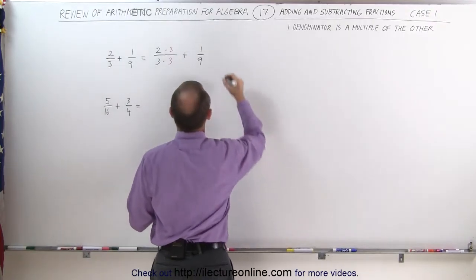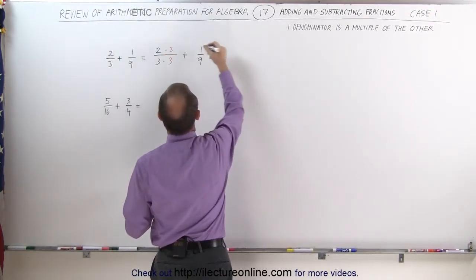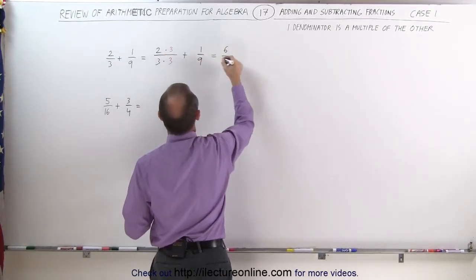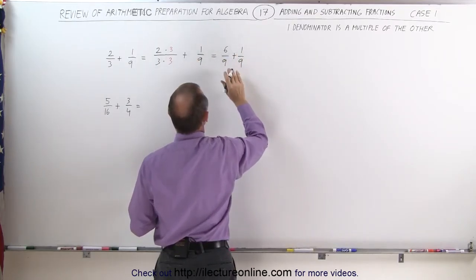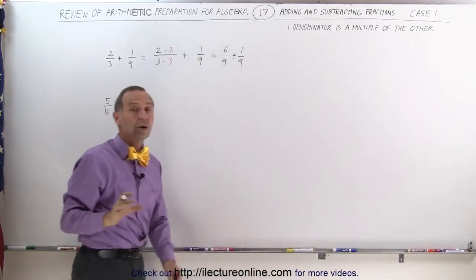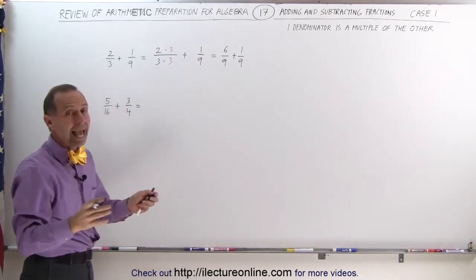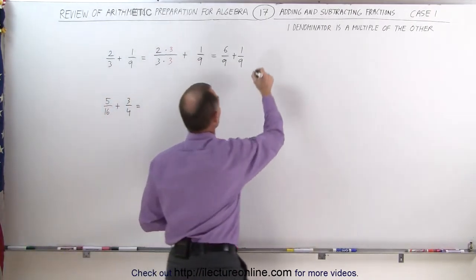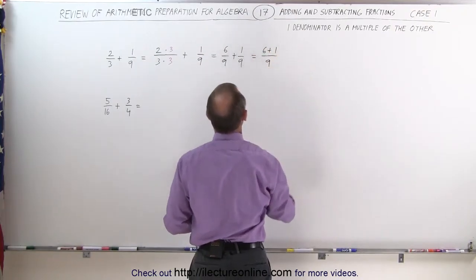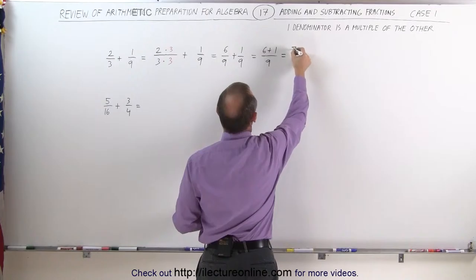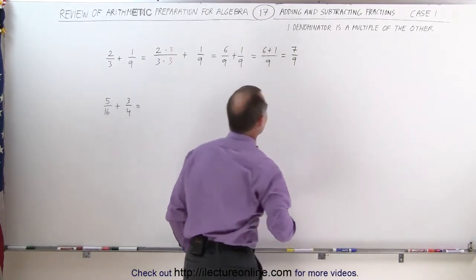This now becomes the following: 2 times 3 is 6, 3 times 3 is 9. I add plus 1 ninth. Notice now it looks just like the previous video. The two denominators are the same, and all I have to do is simply add the two numerators together. This becomes 6 plus 1 over the common denominator 9, and I get 7 divided by 9 as the final solution.